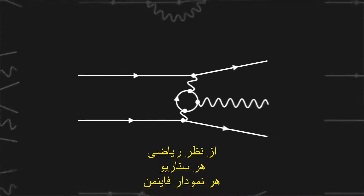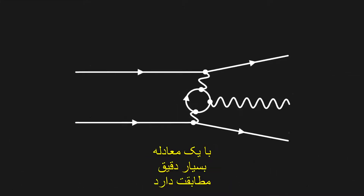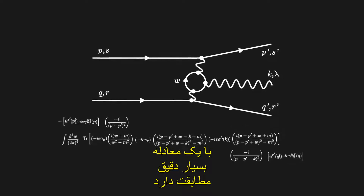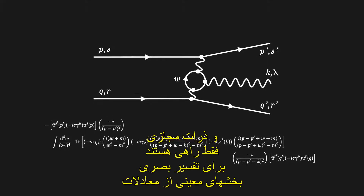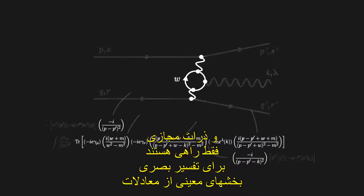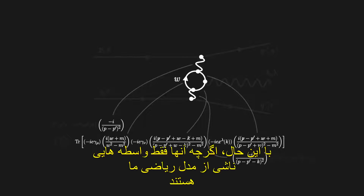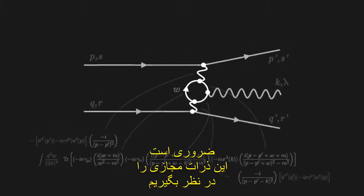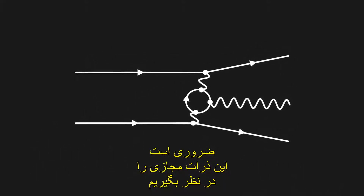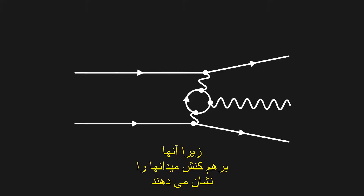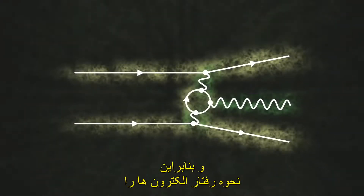Mathematically, each scenario — each Feynman diagram — corresponds to a very rigorous equation. And virtual particles are only a way of interpreting intuitively certain parts of the equations. That said, although they are only intermediaries resulting from our mathematical model, it is essential to consider these virtual particles, because they account for the interactions of the fields, and therefore how electrons behave.